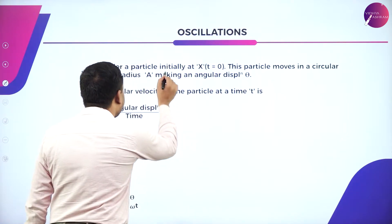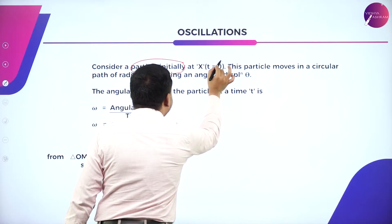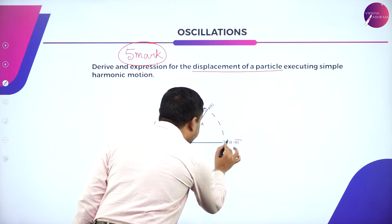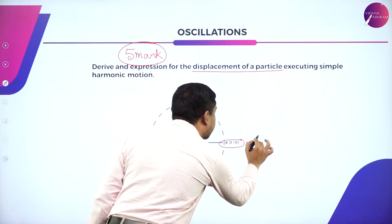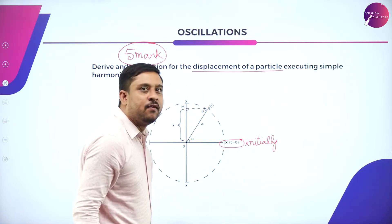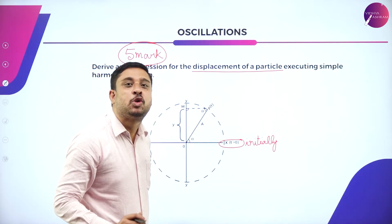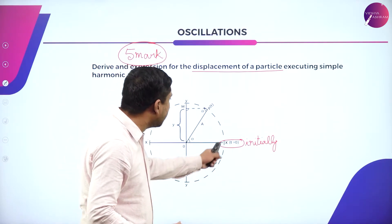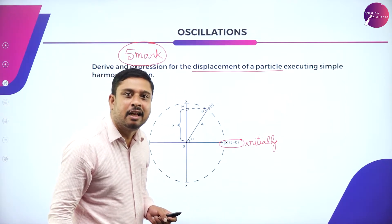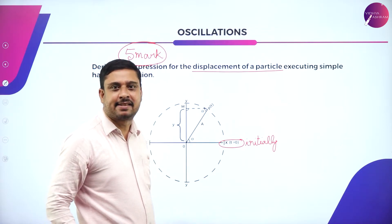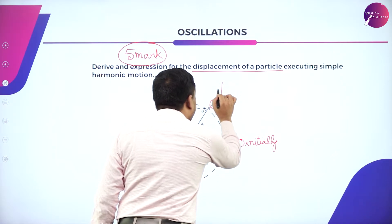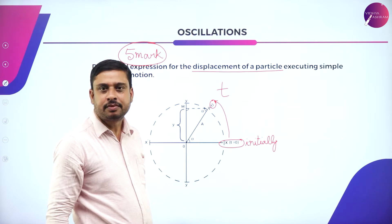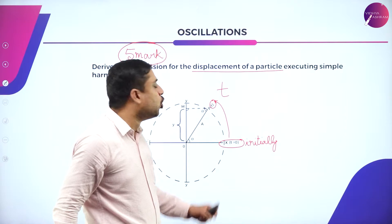I consider a particle initially placed at position X. When I say initially, it means to begin with — when time T is equal to zero. So initially, to begin with, the particle is found at this position X. Now, in a certain interval of time T, the particle moves to the point P — the particle is displaced to the point P.